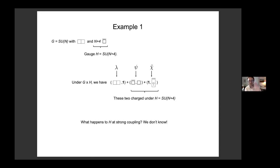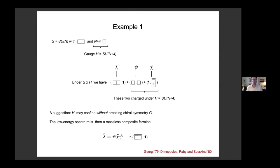What we thought happened for the last 40 years is due originally to Georgi and then a famous paper by Dimopoulos, Rabi, and Susskind. These people pointed out that this gauge theory is an extremely good candidate for a theory that confines without breaking its global symmetry — where the global symmetry of the H gauge theory is the thing I called G. From the perspective of H, G is a global symmetry, but the fermions coupled to H have a 't Hooft anomaly for G, because Lambda and Psi together have a vanishing 't Hooft anomaly for G, but H only knows about Psi.